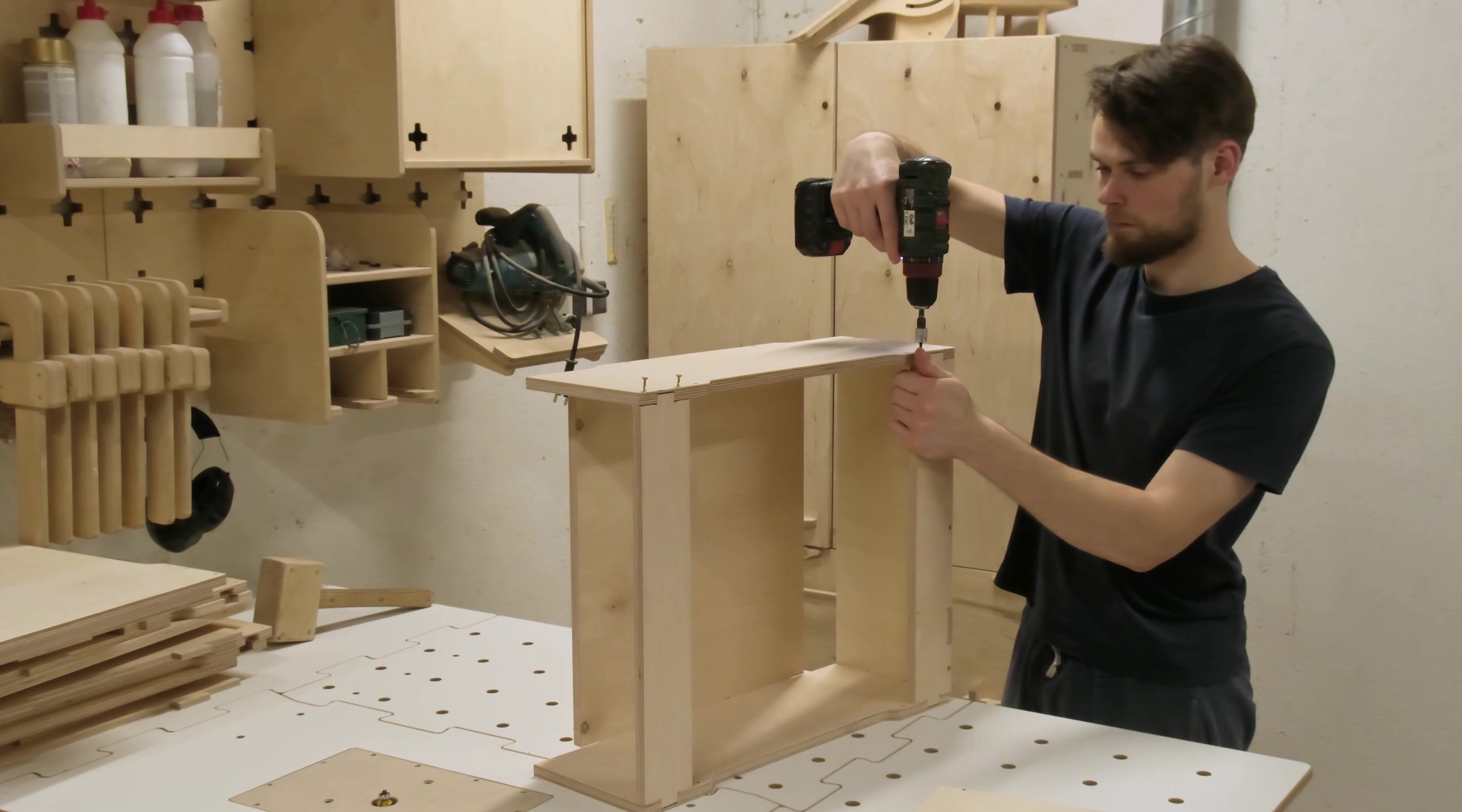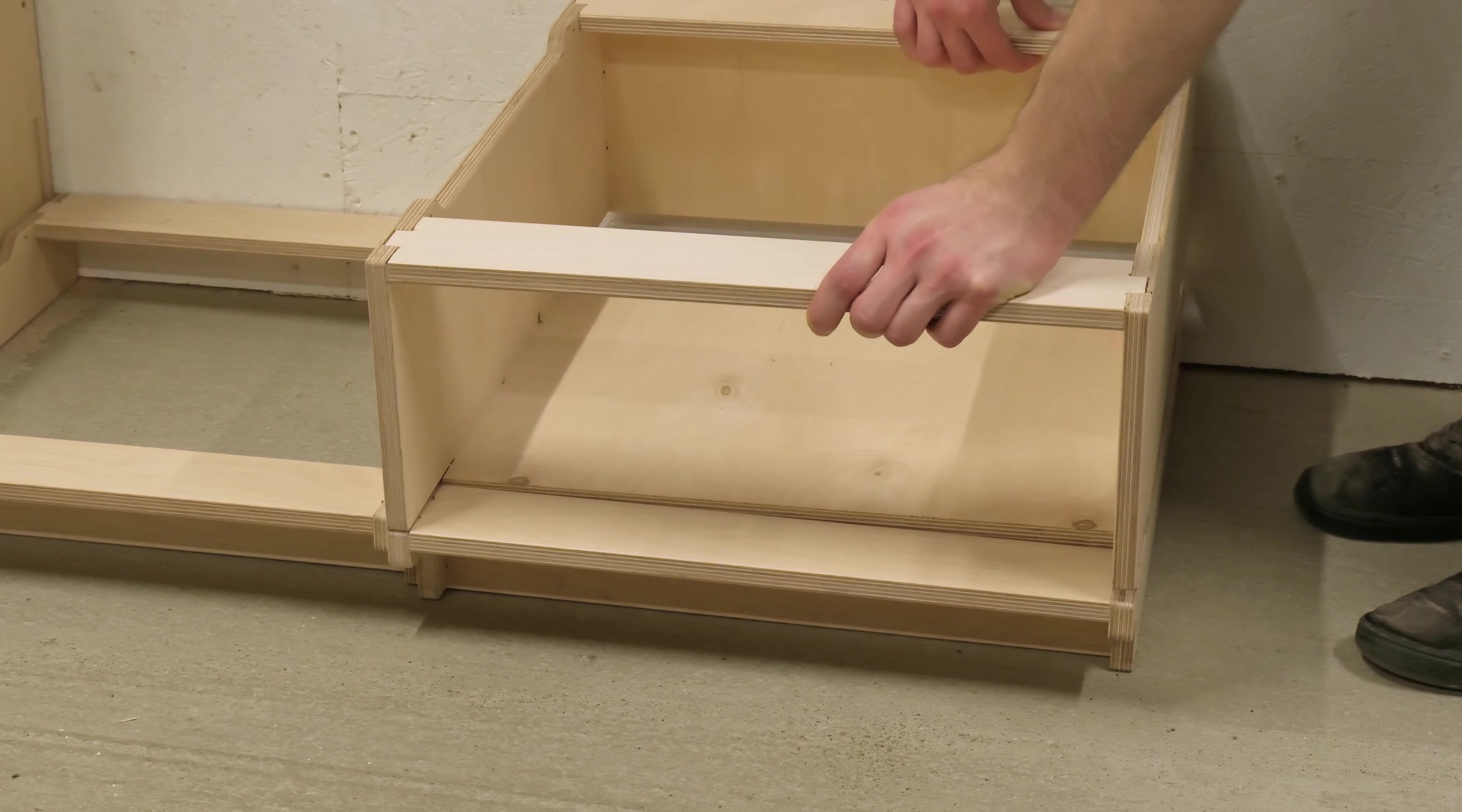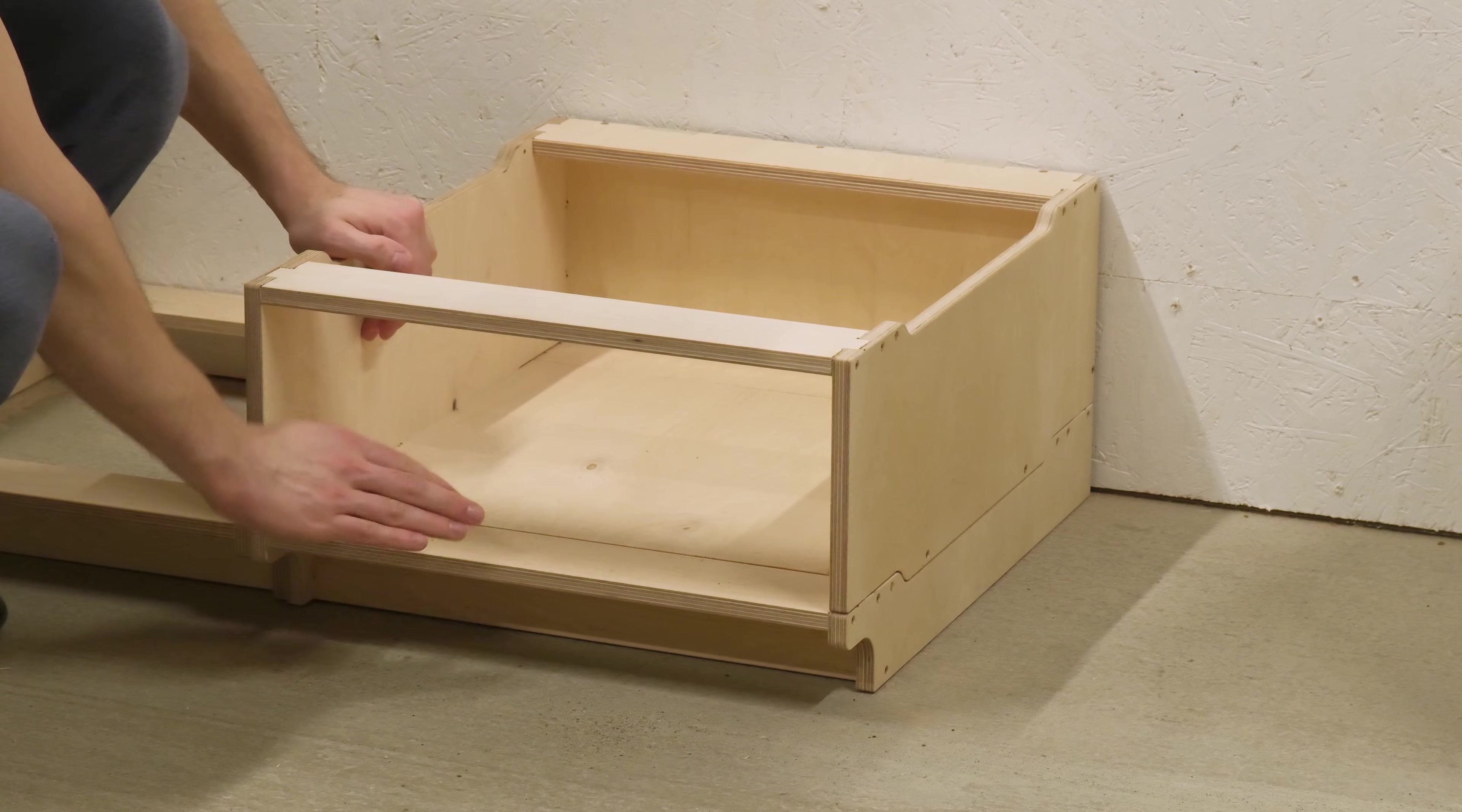Since the back panel is made from 9mm plywood, we pre-drill the screw holes to prevent splitting the veneers. Once the module is ready, it slides neatly on top of the base frame. The floor panel fits perfectly between the smaller floor strips, locking everything together.